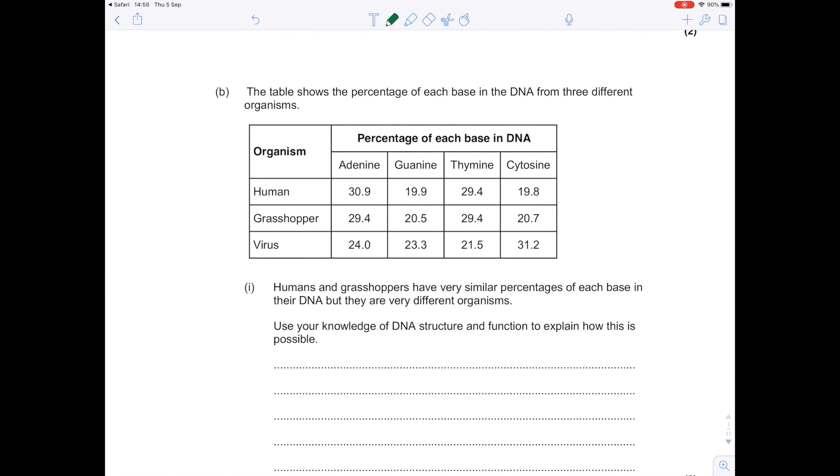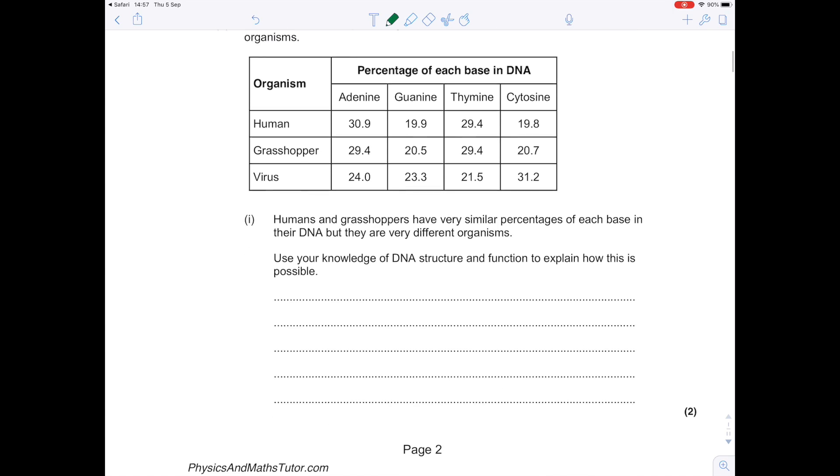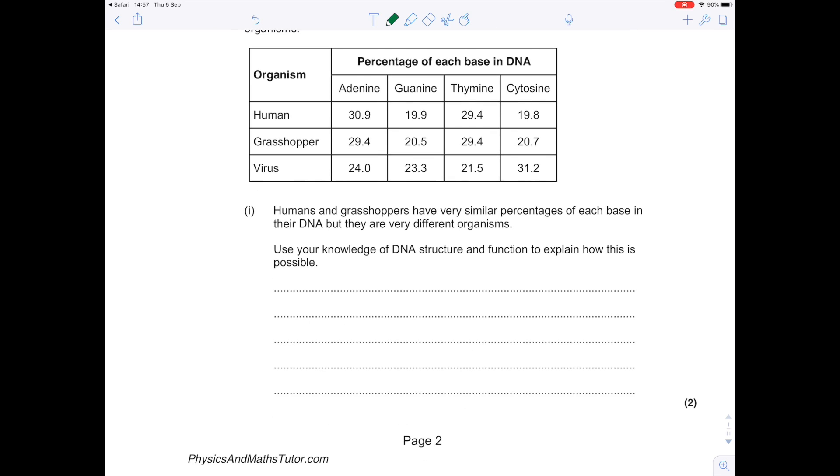The table shows the percentage of each base in the DNA from three different organisms. We're comparing the amount of adenine, guanine, thymine, and cytosine in humans, grasshoppers, and a virus. Humans and grasshoppers have very similar percentages of each base in their DNA, but they are very different organisms. Use your knowledge of DNA structure and function to explain how this is possible. Remember that the physical characteristics are given by genes, because a section of DNA codes for a particular protein. So although they have a similar percentage of each base, they have different genes, which means that different amino acids and proteins are coded for.